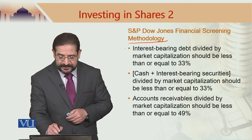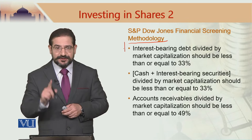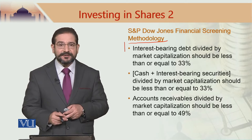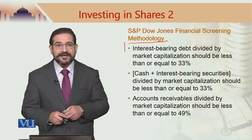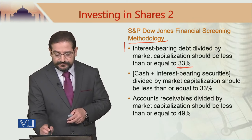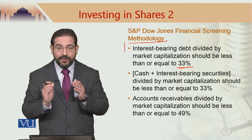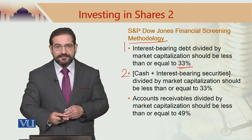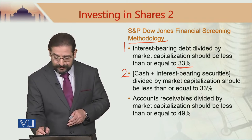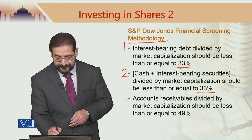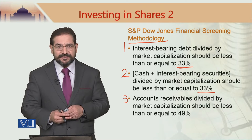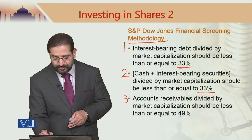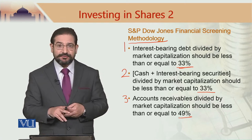In the case of S&P Dow Jones financial screening methodology, screen number one is: interest-bearing debt divided by market capitalization of the company should be less than or equal to 33%. Screen number two: cash plus interest-bearing securities divided by market capitalization of the company should not exceed 33%. Screen number three: accounts receivable divided by market capitalization of the company should not exceed 49%. So these are three screens: 33%, 33%, 49%.